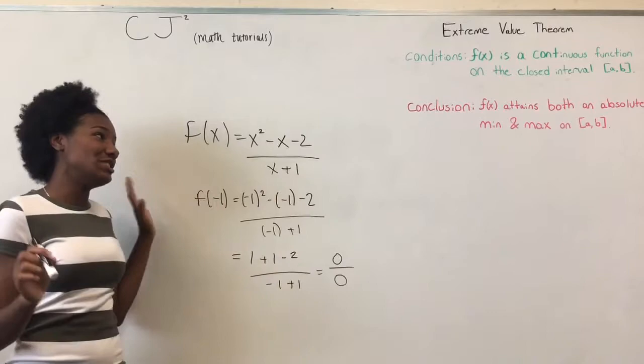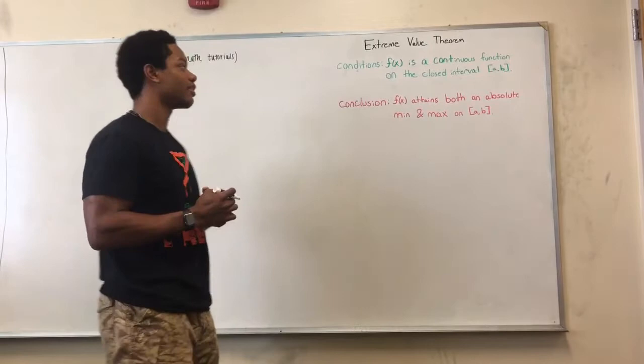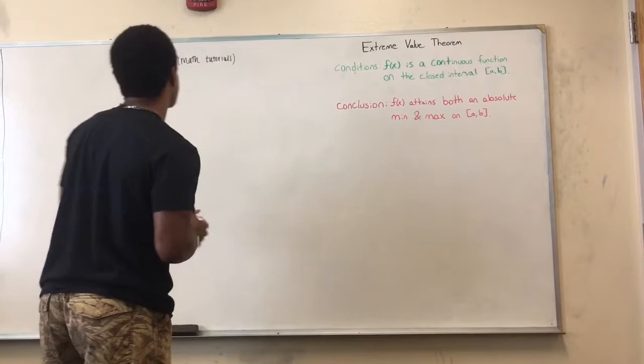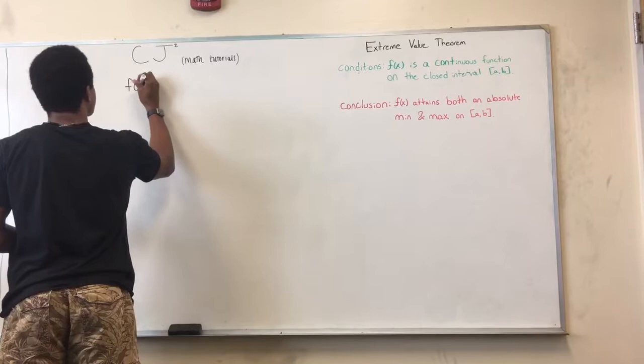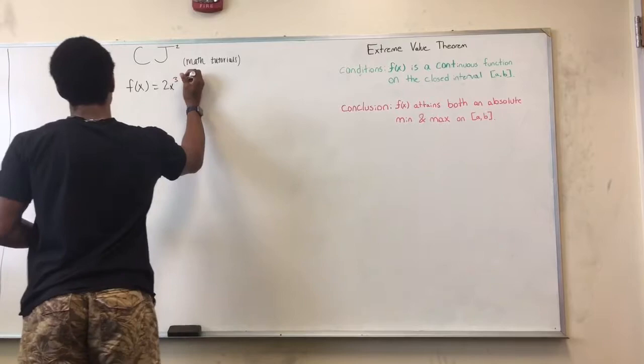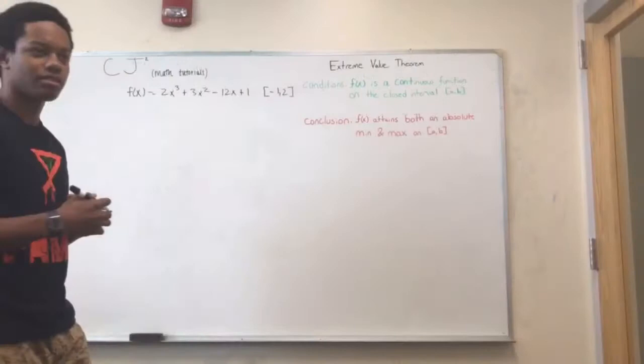Which would make this function discontinuous and you can't apply the extreme value theorem to it. My name is Jaleel Reed and I'll be explaining where you can use the extreme value theorem to find the absolute min or max value on a function. We have a function F of X equal to 2X cubed plus 3X squared minus 12X plus 1 on the interval negative 1 to 2. To see if we can actually apply the extreme value theorem to this function we have to see if the conditions are met.